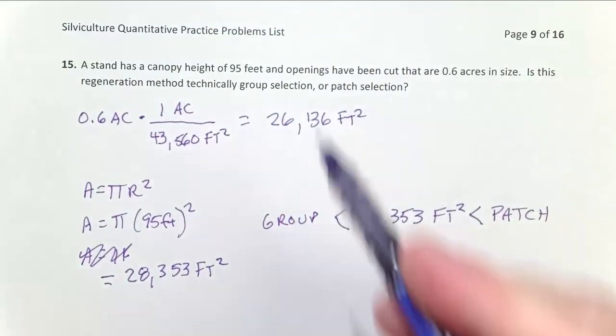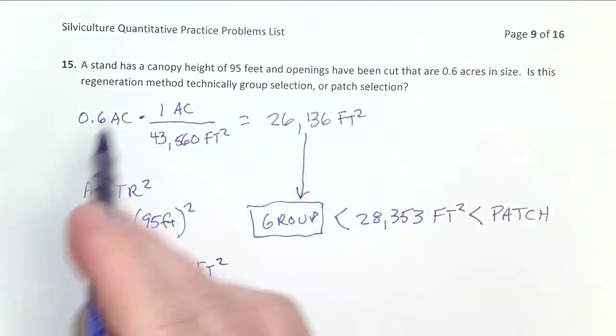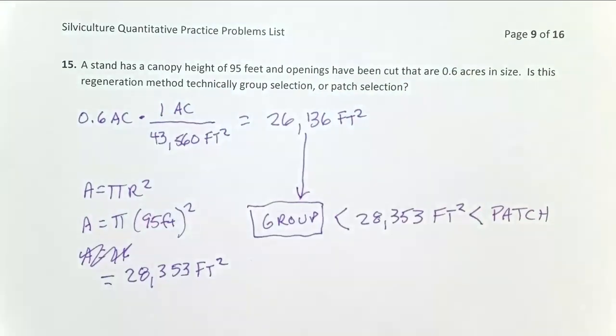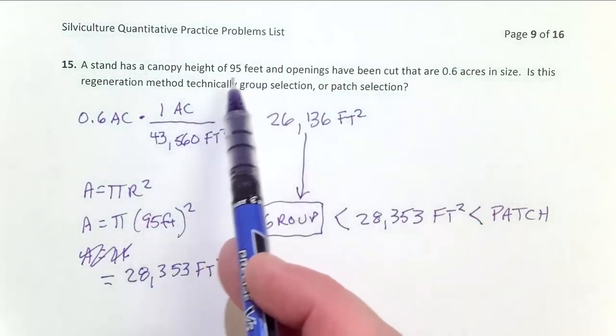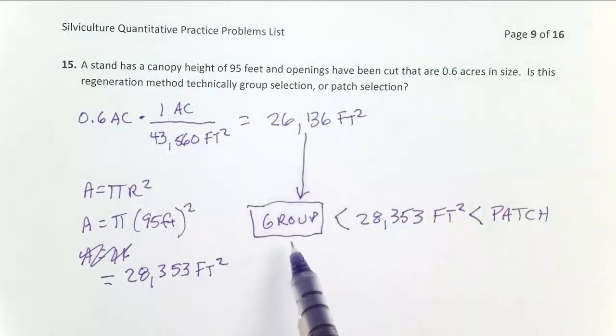And based on this, I know the correct answer is that this stand is being managed with group selection. Because of the tall trees here, 95 feet, what we're seeing is that there's going to be significant shade in these 0.6 acre openings. And so we would call that group selection.